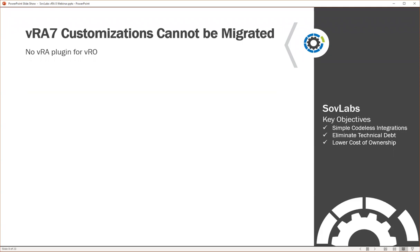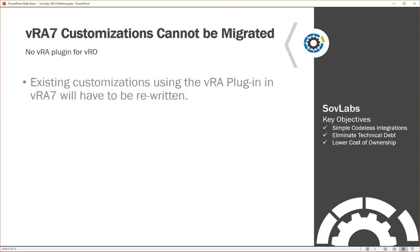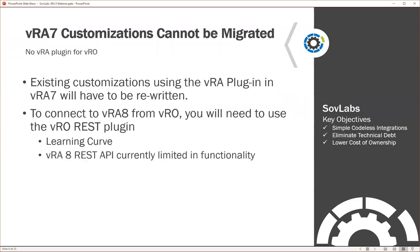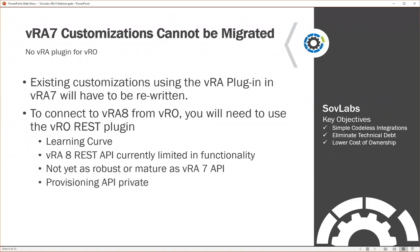When we start talking about migrating from VRA 7 to VRA 8, one key thing to consider is there's no VRO plug-in for VRA 8 like there is for VRA 7. So existing customizations within VRA 7 are realistically going to have to be rewritten. To connect to VRA 8 from VRO, you'll need to use the REST plug-in as opposed to the VRA plug-in that ships with VRA 7. It's an entirely new API — if you're familiar with the VRA 7 API, the VRA 8 API is significantly different and currently limited in functionality, not yet as robust as VRA 7.